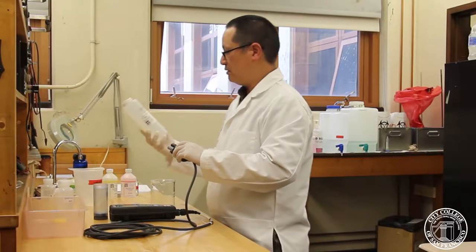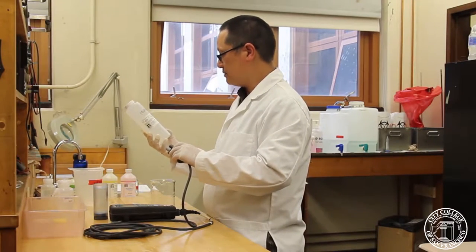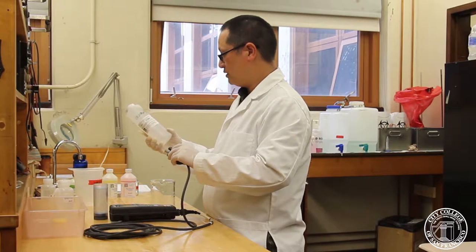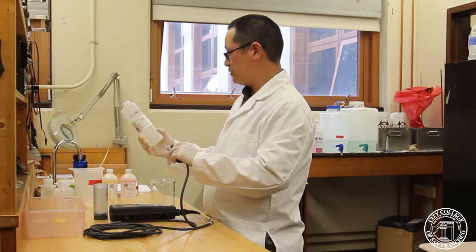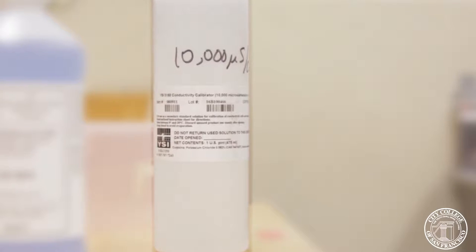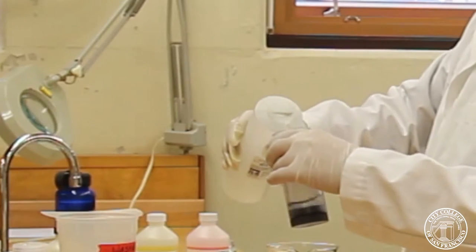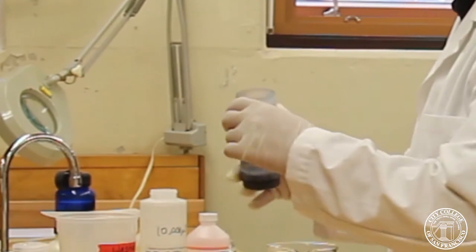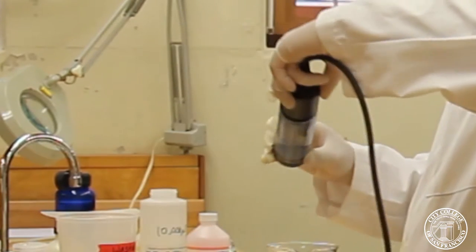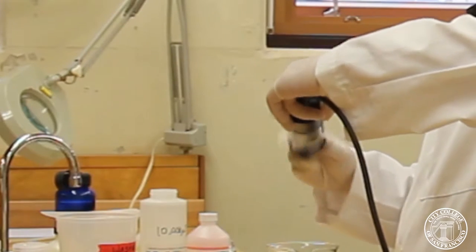Then we'll take our 10,000 micro Siemens per centimeter solution. You want to check the date, make sure it hasn't expired, which is good. And you want to pour a little bit of the solution into the cup and rinse it out with the probe.